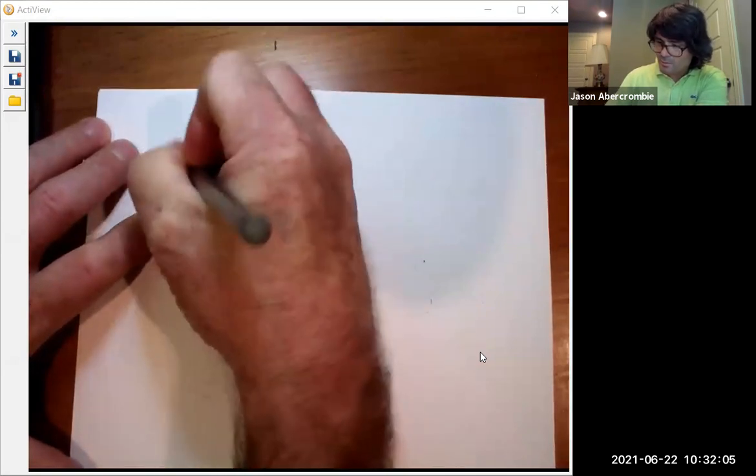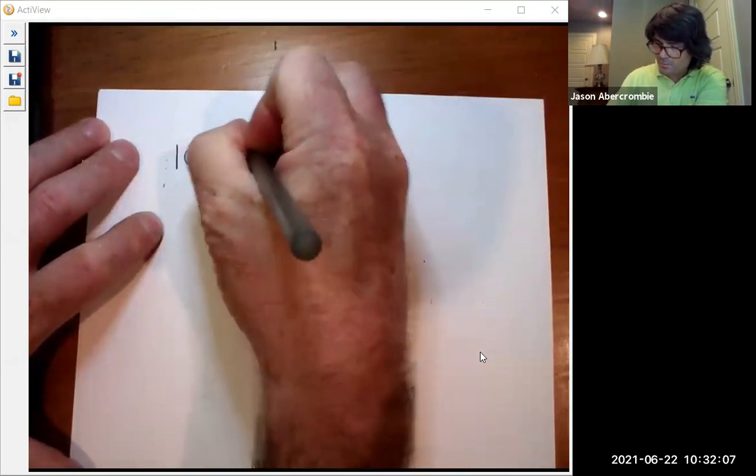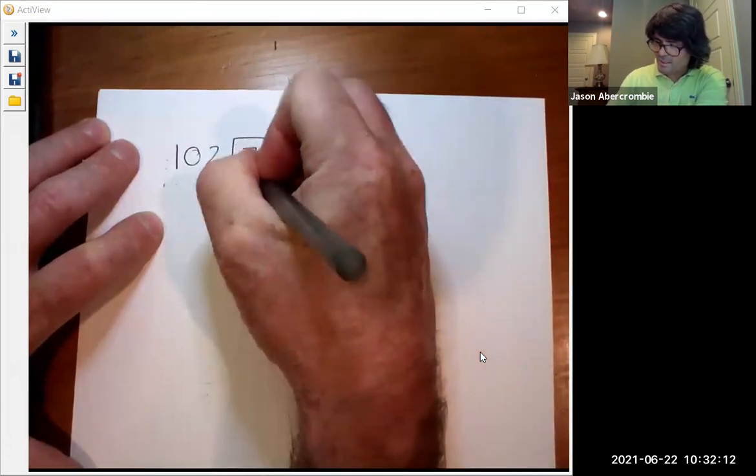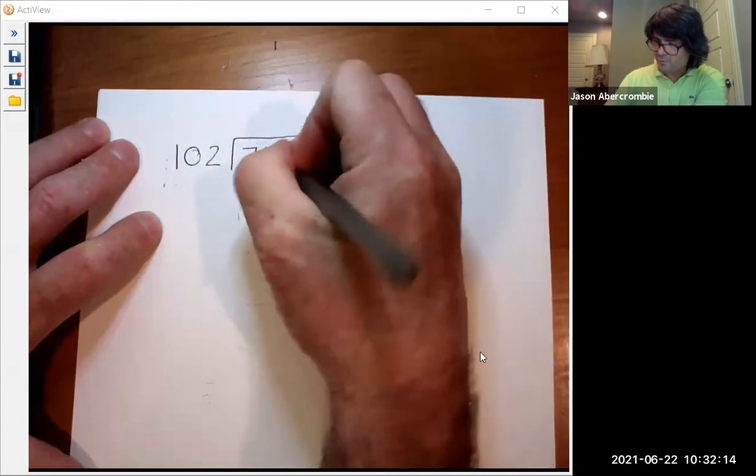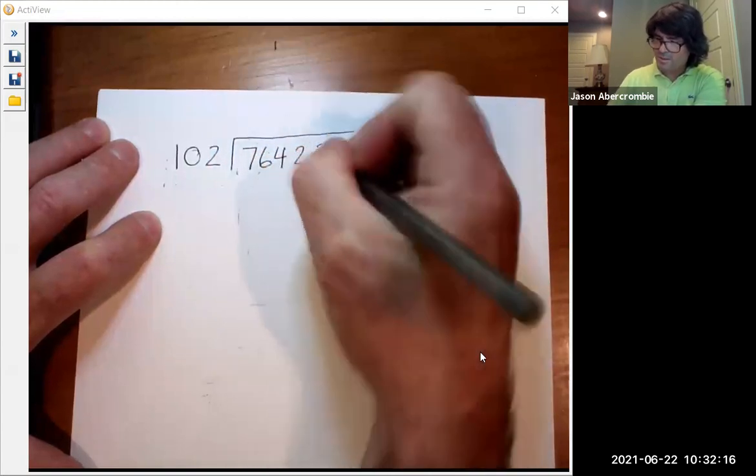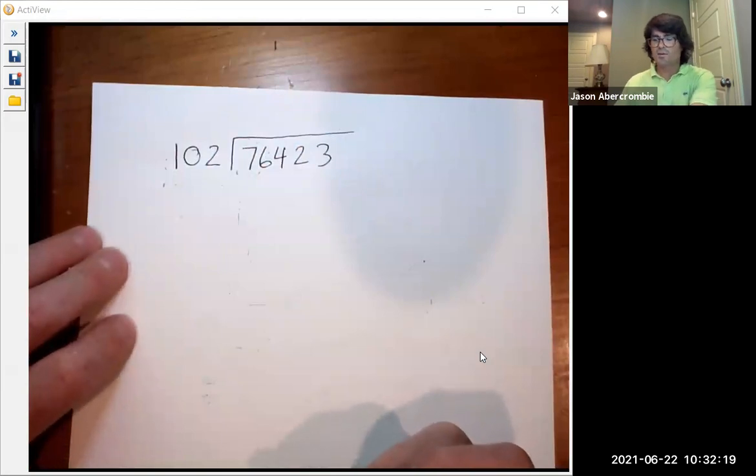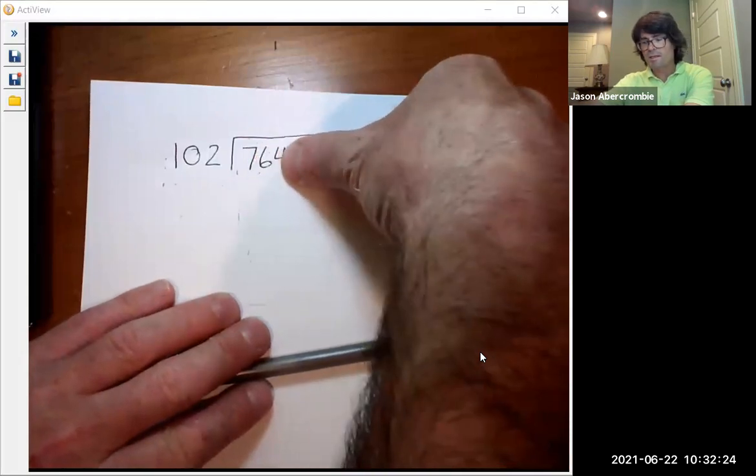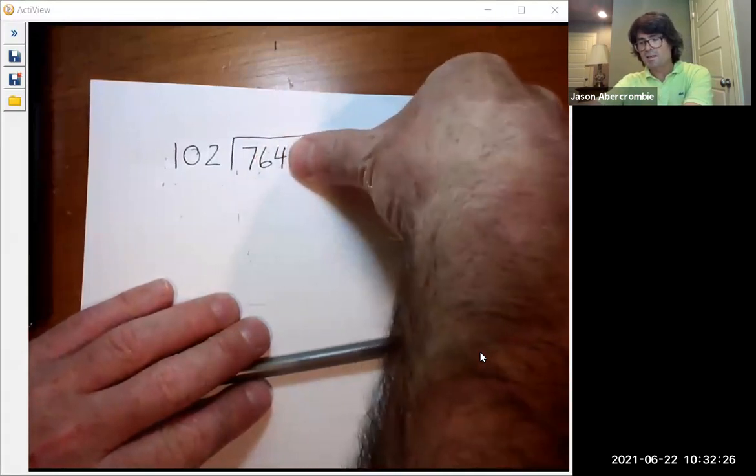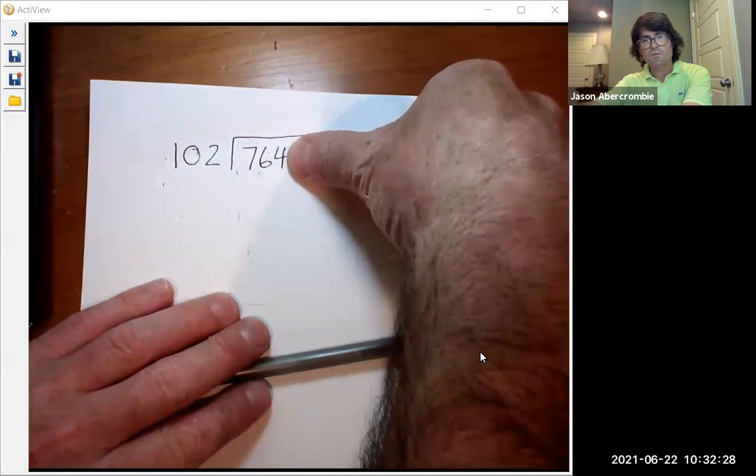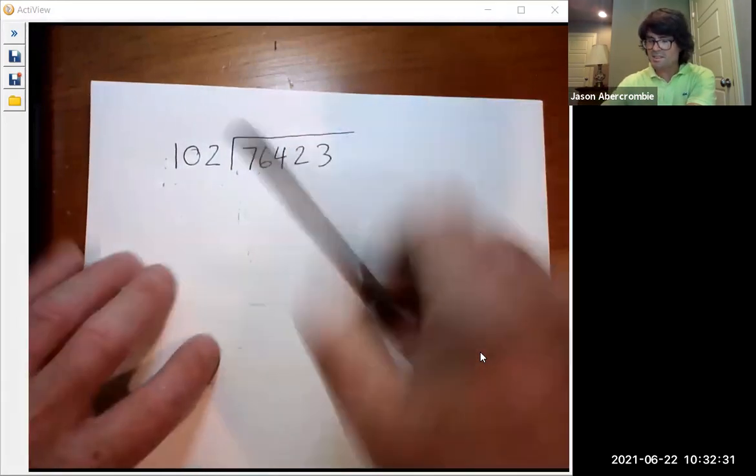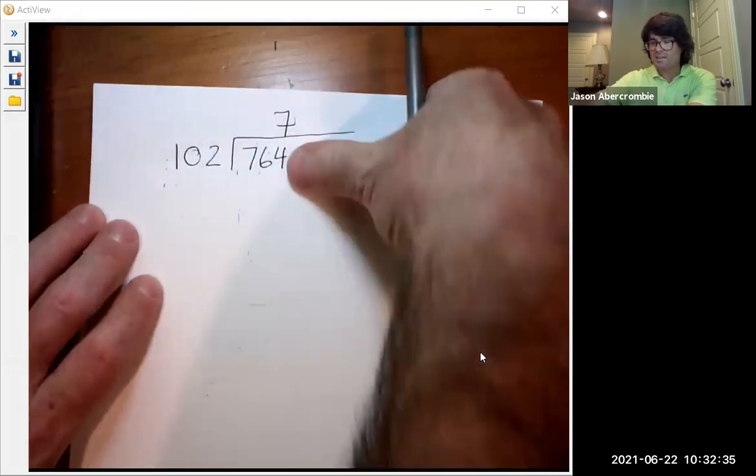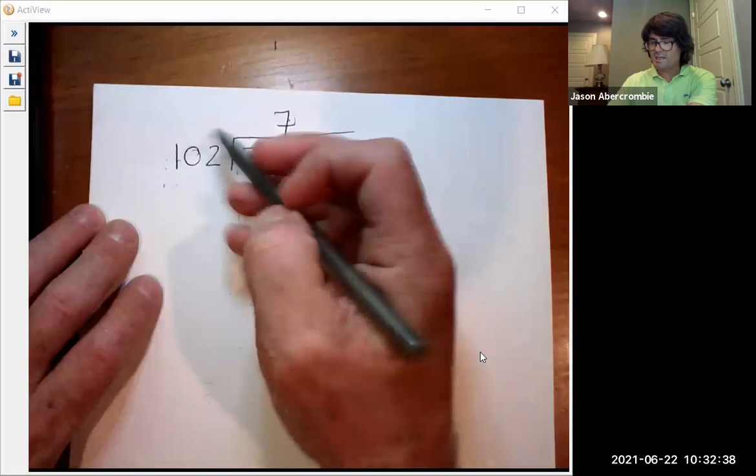This time we'll do 102 divided into 76,423. A large number and a large divisor. Does 102 go into 7? No. It doesn't go into 76. It does go into 764. I guess it goes in 7 times. I'm going to put a 7 right here. Notice how I kind of line up the 7 with the 764. 7 times 1 is 7. 7 times 2 is 14.